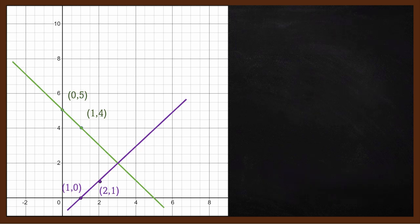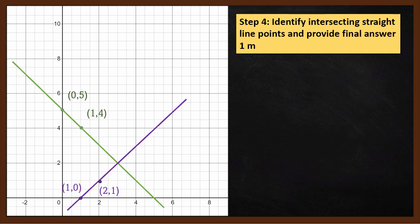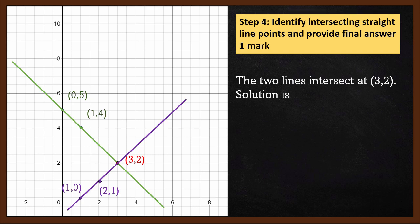Step 4: Identify the intersection point of the two straight lines and provide the final answer. The two lines intersect at the point (3, 2), meaning x equals 3 and y equals 2. That is the solution. Thanks for watching this video!